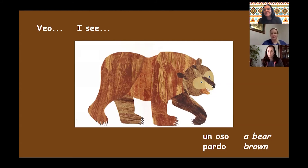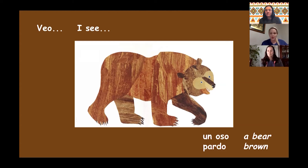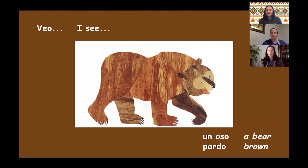And Lexi's going to help you with the colors. So Steph, this bear — un oso — what color is it? He is brown. Muy bien. So we're going to say I see a brown bear. Brown in Spanish goes right after the animal. So we're going to say un oso pardo. Un oso pardo. Muy bien. Let's put it all together. Veo un oso pardo. Great. Muy bien.